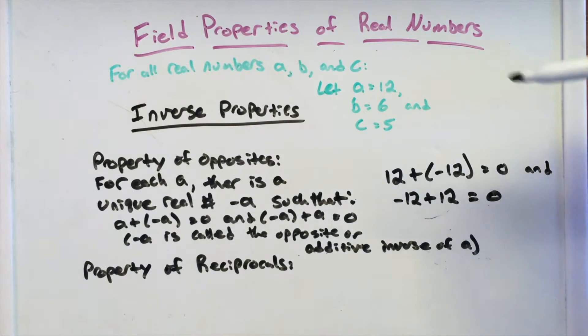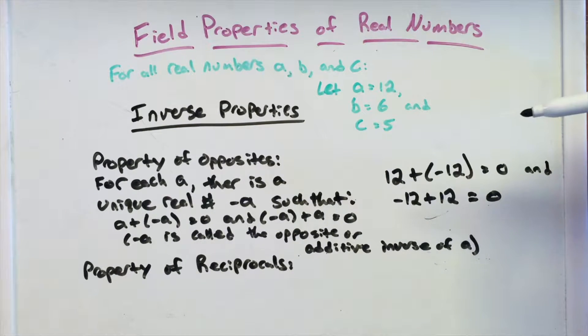Now, again, it could be any real number, so our original A could be a negative number, and then its inverse would be a positive number. And it could still be 0, too. 0 is a real number. 0 plus 0 is 0 still. Property still holds.